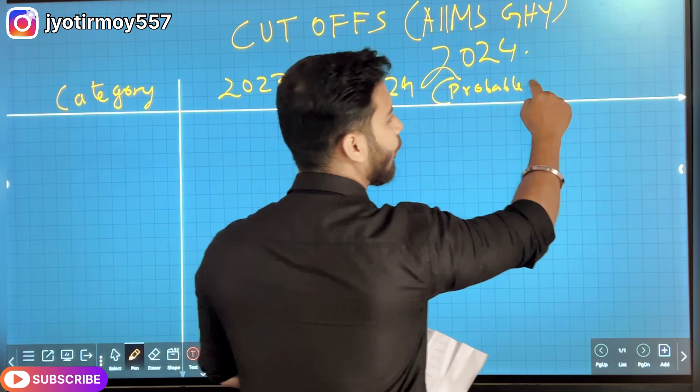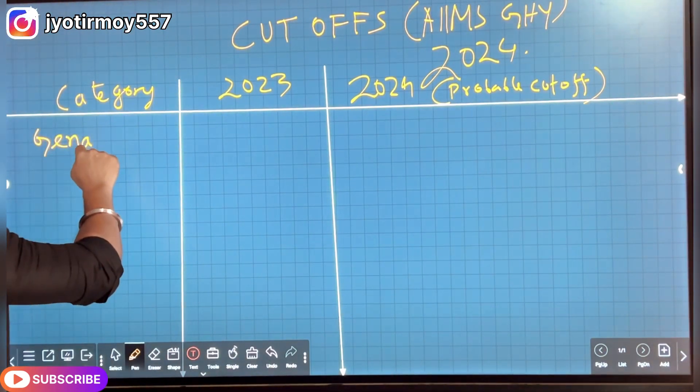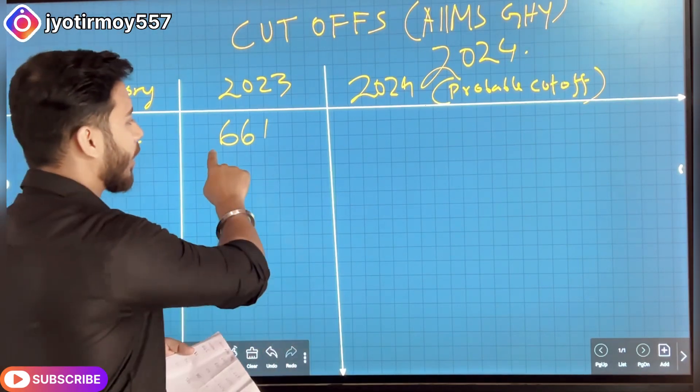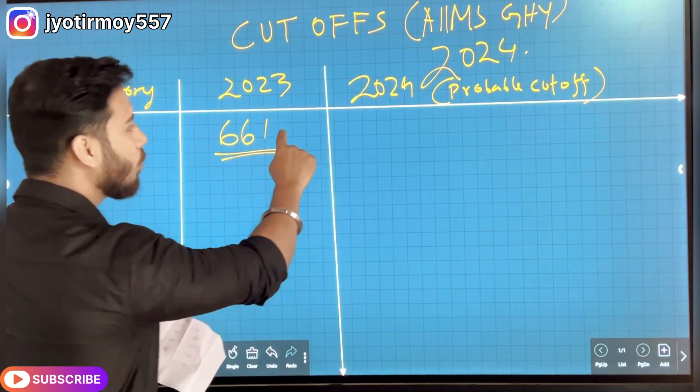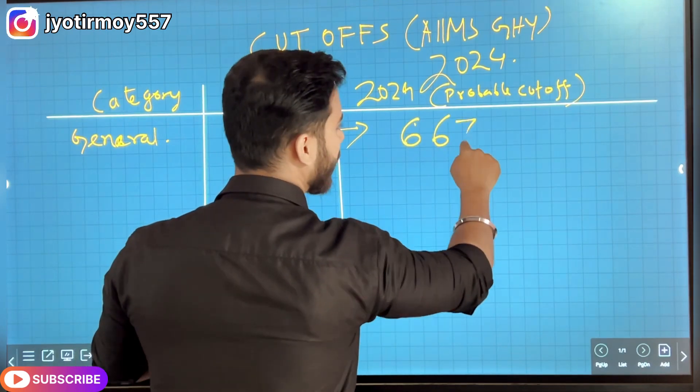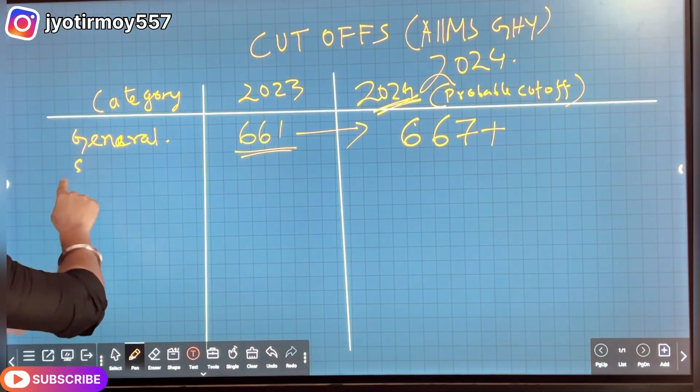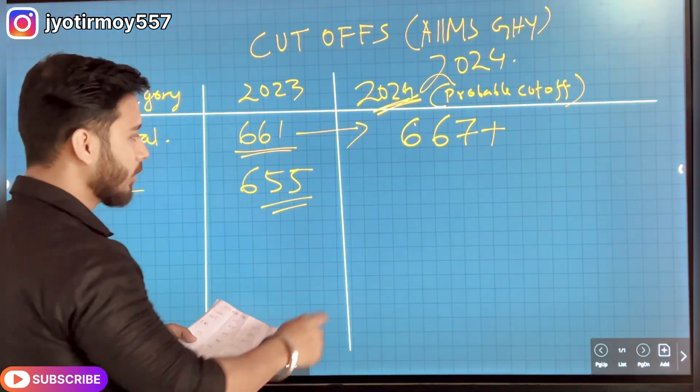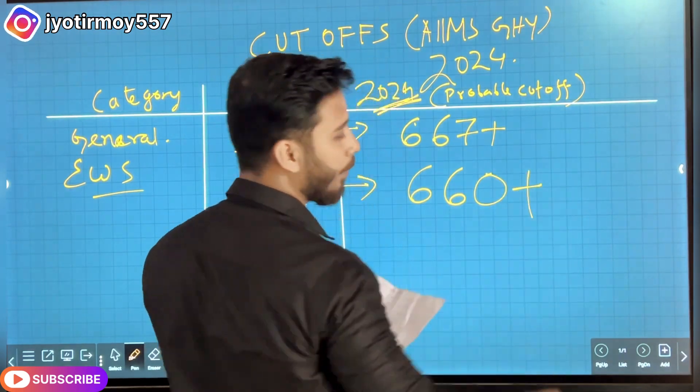Probable cutoff for 2023 was 661, yes out of 750, 661 for general category. For EWS, the candidates for 2024 need 660 plus marks.